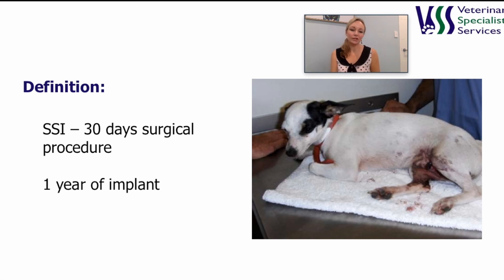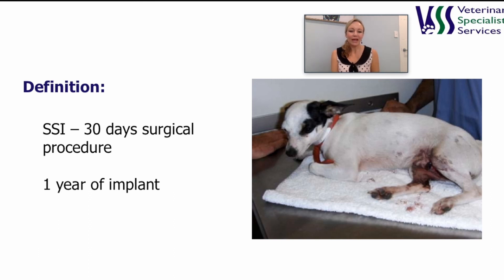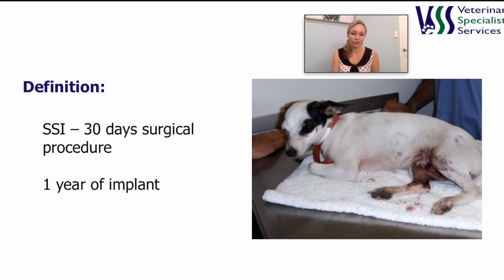A surgical site infection is one that occurs within 30 days of a surgical procedure or within one year of placing an implant. There are costs associated with a surgical site infection in terms of patient morbidity, financial costs to clients for implant removals and antimicrobials, and often a cost to the practice as well. We often use antibiotics to treat surgical site infections, which contributes to antibiotic overuse, especially if the infection could have been prevented.